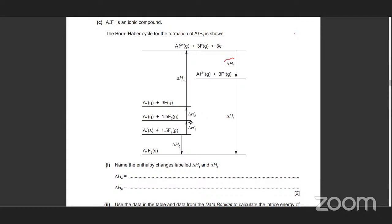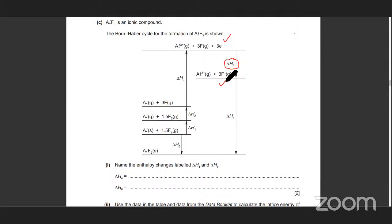So where is 4? 4 is this one. So what's happening in 4? Look carefully — this is your starting point and this is your product. You can see that F gains electrons over here. Nothing happens to Al³⁺. But what happens is that fluorine gains electrons — so that's the electron affinity of fluorine.